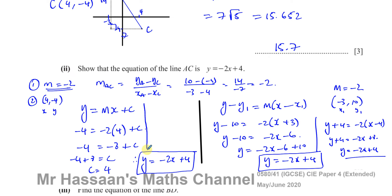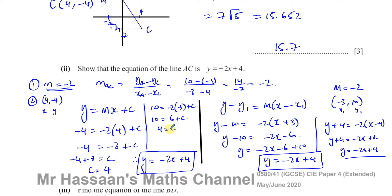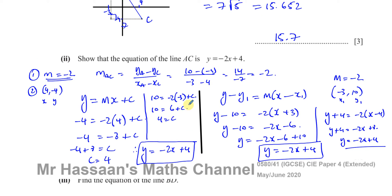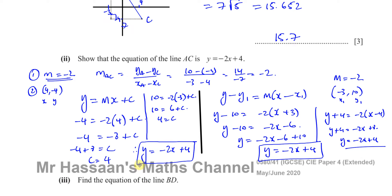If I used the point (4, -4) in that formula: y - (-4) = -2(x - 4), so y + 4 = -2x + 8, giving y = -2x + 4. Same answer again. Whichever points you use, whether you use the y = mx + c method or y - y1 = m(x - x1), you will still get the same answer. Both methods are valid.